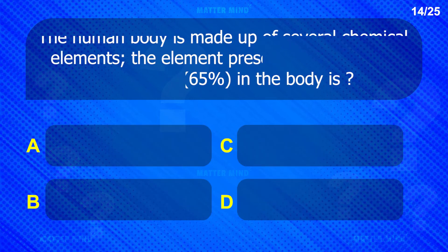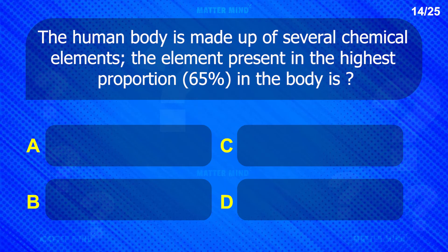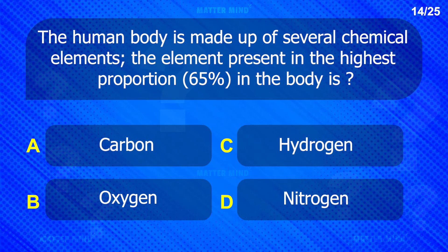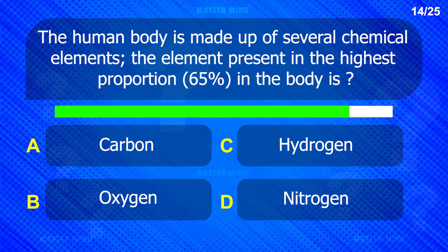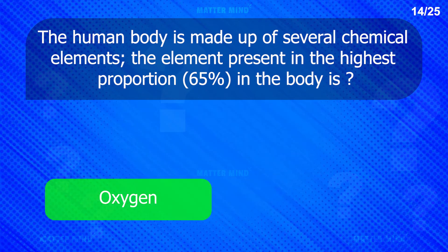The human body is made up of several chemical elements. The element present in the highest proportion — 65% in the body — is: Oxygen.